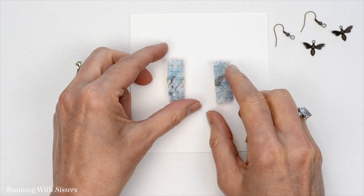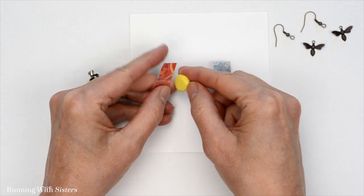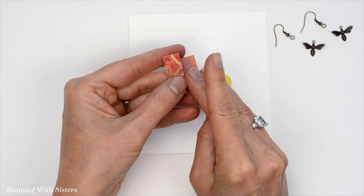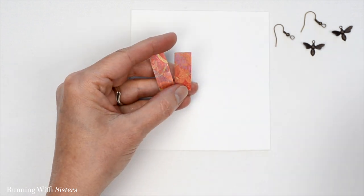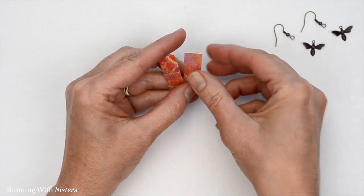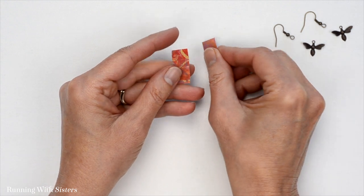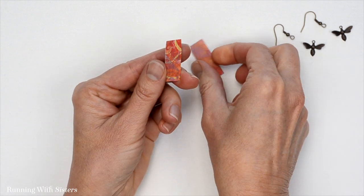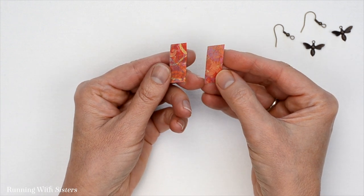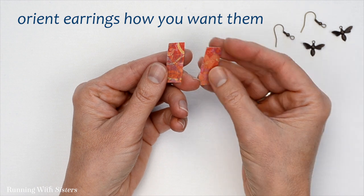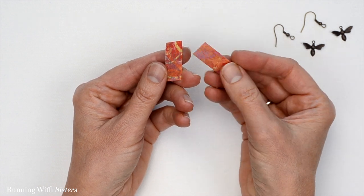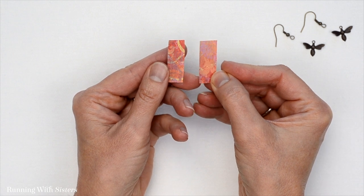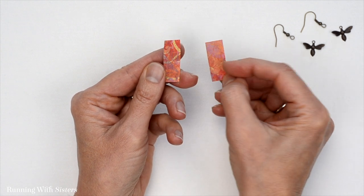Now that the clear nail polish is dry, we're going to show you how to turn this beautiful scrap of paper into a pair of earrings. To do that, I'm going to start by punching a hole at the top of the little pieces of scrap of paper. I want to look at them to make sure I've got them oriented how I want them. I think I like them like that so they're a little bit offset so they look a little bit different from each other. The red at the top here and the red at the bottom here.